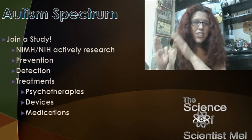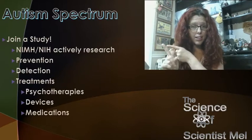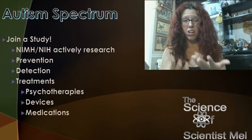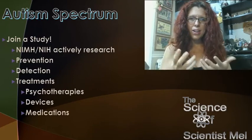You can join a study. NIMH and NIH actively research individuals on the spectrum involving prevention, detection, treatments including psychotherapies, devices, and medications to help alleviate symptoms. Similar to people with high IQs, you have to treat the symptoms associated with the brain's wiring in order for them to see their talent. Teaching coping mechanisms, social interaction skills, and addressing anxiety and depression can alleviate symptoms and allow people to see how awesome they truly are.